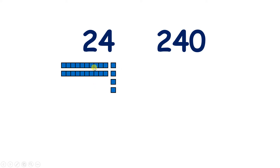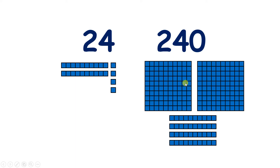Here we have the numbers 24 and 240. How are these numbers different? Well, with 24, we have two tens and four units, and with 240, we have two hundreds and four tens. So 24 is a much smaller number than 240.